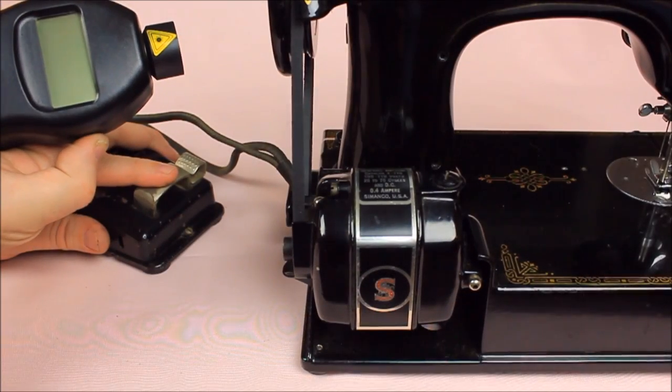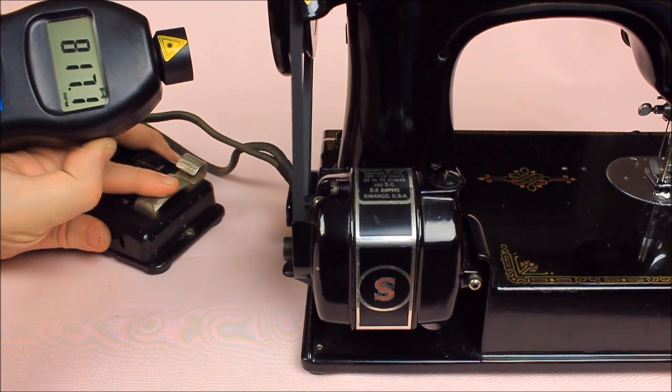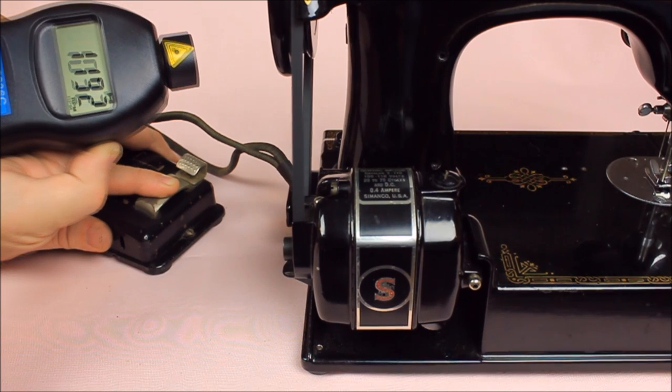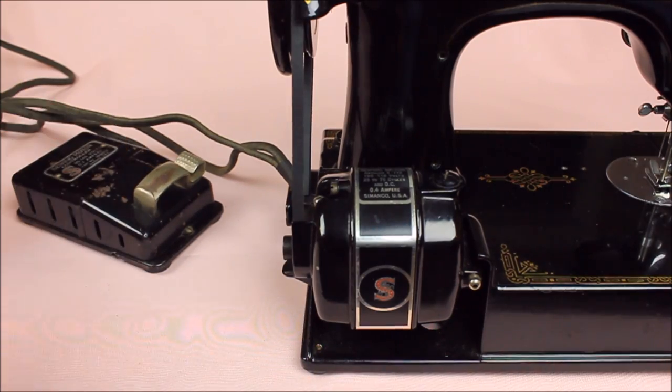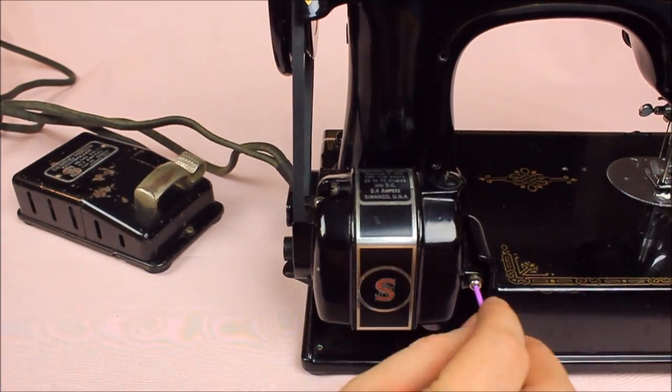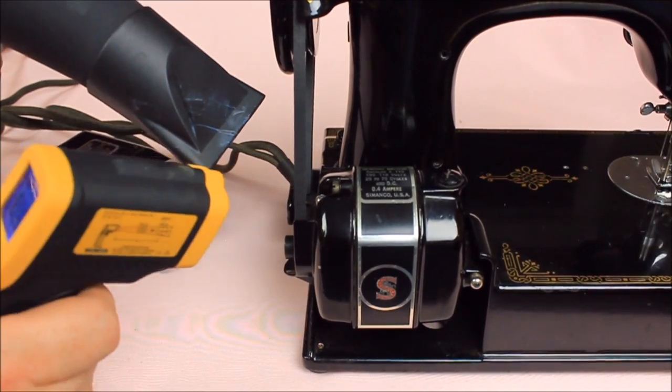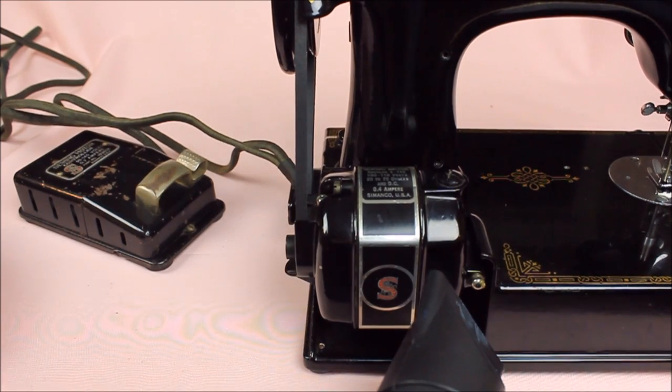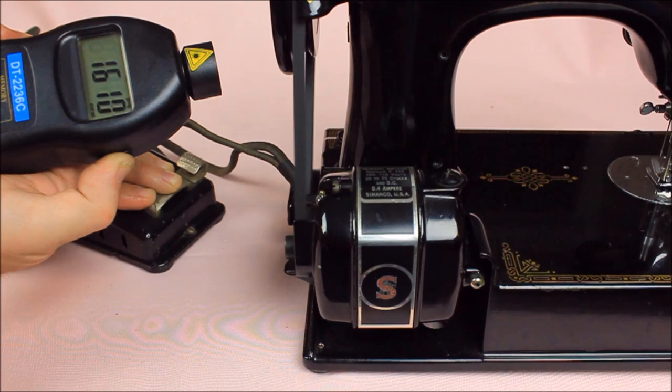As you can see from this RPM demonstration on this machine that hadn't had its motor lubricated in quite some time, the RPMs of the motor turning the hand wheel reached a high of 1246 rotations per minute prior to being lubricated. After the old hardened grease was cleaned out of the ports and our new lubricant was added, the ports were heated with a hairdryer to get the lubricant flowing through the old dry wicks. There was a significant increase in the RPMs, up to 1652.